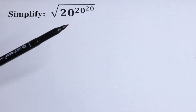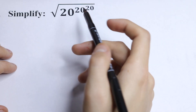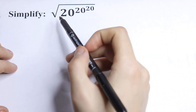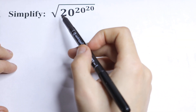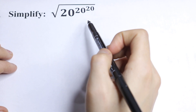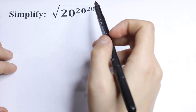Hello everyone, welcome back to MathMood. Here we have an interesting algebra question. We need to simplify this: the square root of 20 to the power 20 to the power 20. How can you do this?